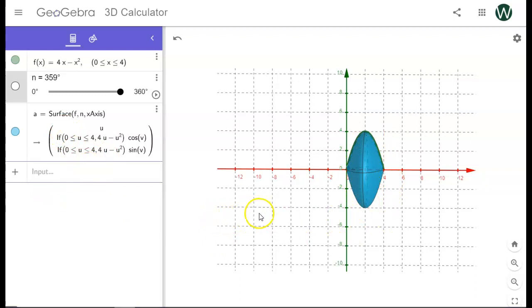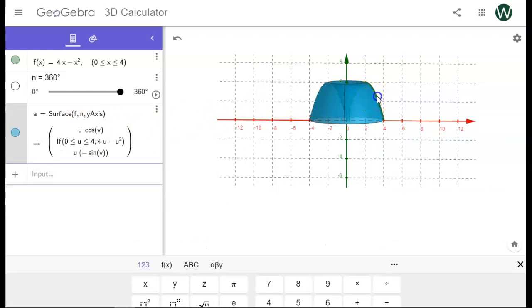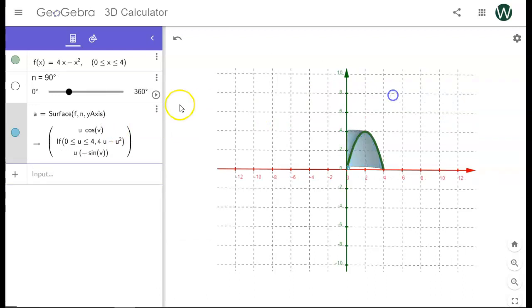What if the axis is not the x axis? Oh, by the way, I can make a simple change right here. Change that to y. And now it rotates around the y axis.